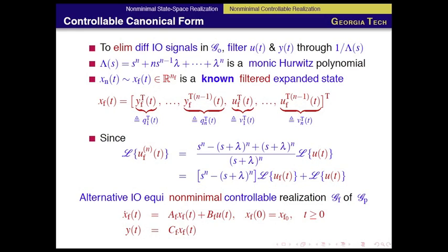As you see, this nonminimal state-space realization has the same input-output map through this dynamic. We took the system xp dot equals, yp equals, and converted that system to another system. The important part is we know the system states.